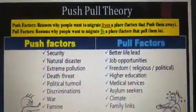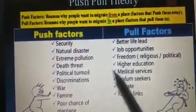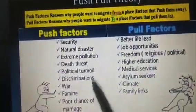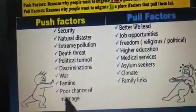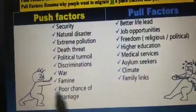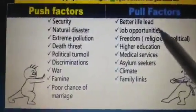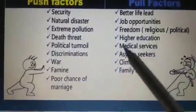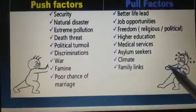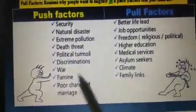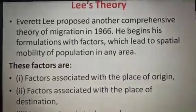Again, in diagram and table form, you can see all the push factors: security threats, natural disasters, extreme pollution, death threats, political turmoil, discrimination, war, famine, poor chance of marriage, etc. The figure shows a man being pushed from place A to place B. Pull factors include better life, jobs, freedom, higher education, medical services, asylum, climate, and family ties — with a figure attracting and pulling people toward the new place.